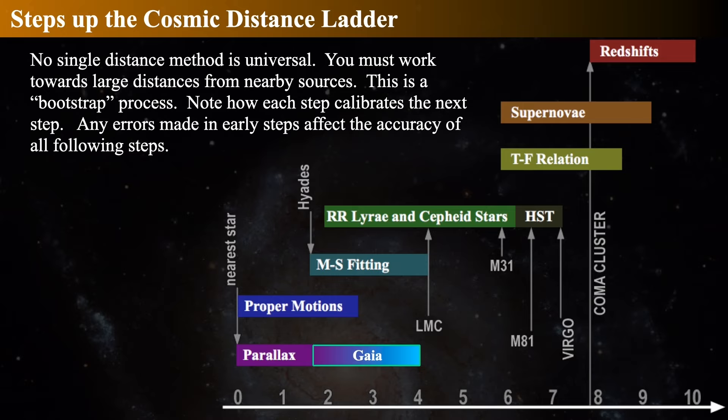Here is what we call the cosmic distance ladder. We start with parallaxes and use proper motions and main sequence fitting or cluster diagrams. The Hyades is critical. Cepheids and RR Lyrae get you out to the Large Magellanic Cloud and out to the Virgo cluster with the Hubble. Then you have the Tully-Fisher relationship, Type Ia supernovae, and other bright objects, which get you out to the Coma cluster at about 10 to the eighth parsecs. And then finally you can start calibrating the redshifts.